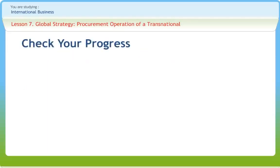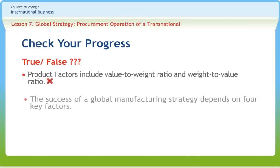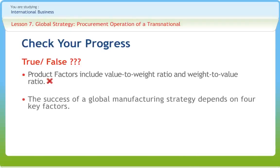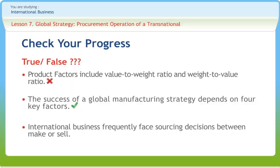Now let us check if we have understood the various concepts discussed in this lesson. Product factors include value-to-weight ratio and weight-to-value ratio — right or wrong? The success of a global manufacturing strategy depends on four key factors — right or wrong? International business frequently faces sourcing decisions between make or sell — right or wrong? The answers are: the first statement is right, the second is wrong, and the third is wrong.